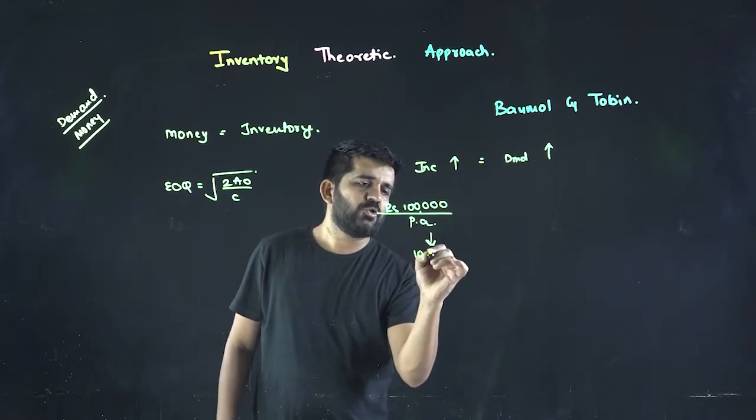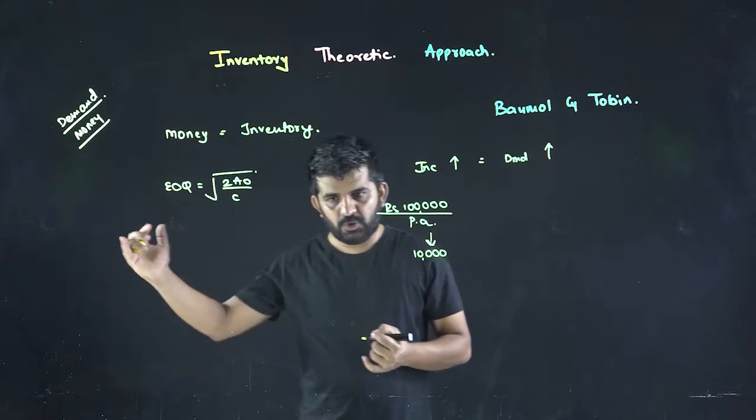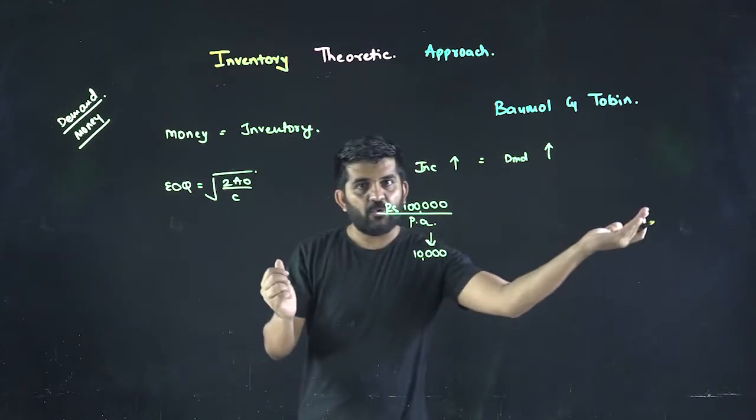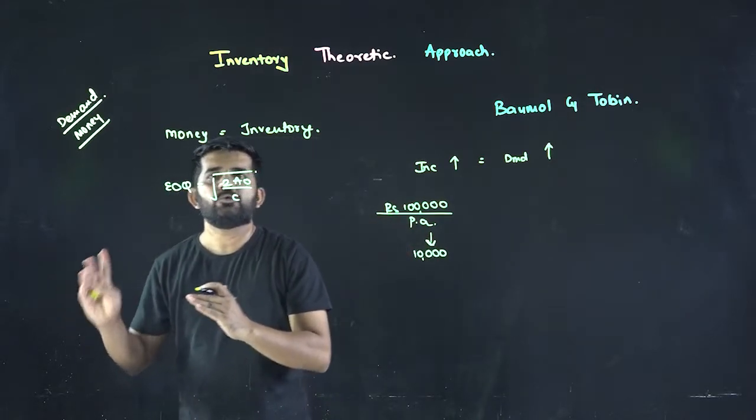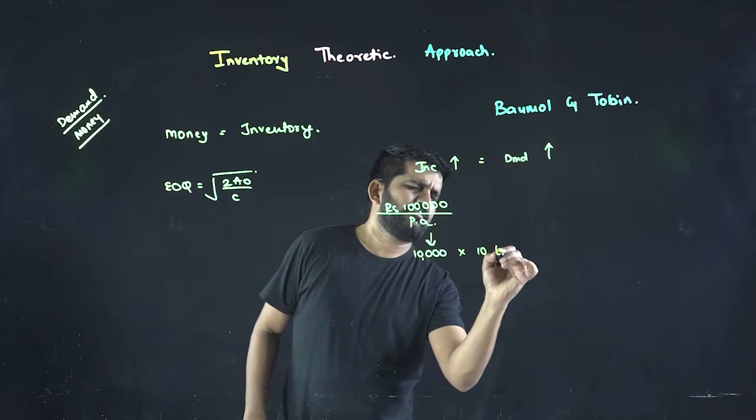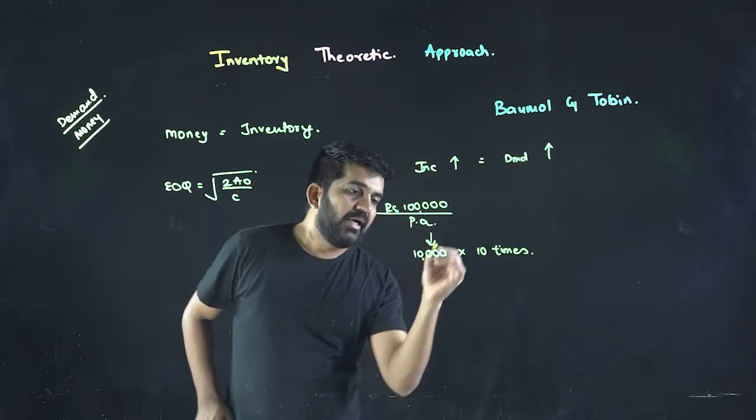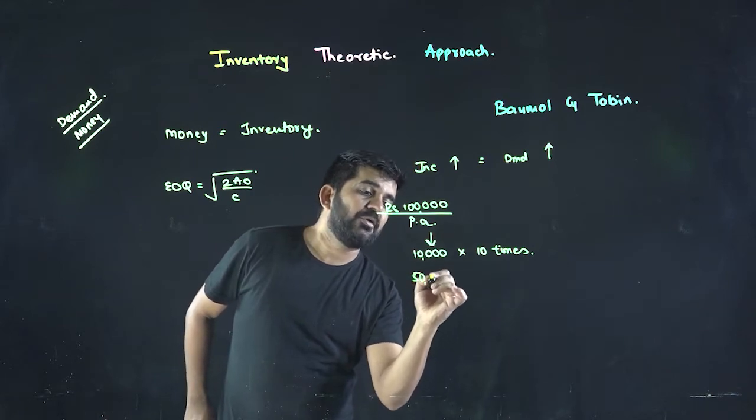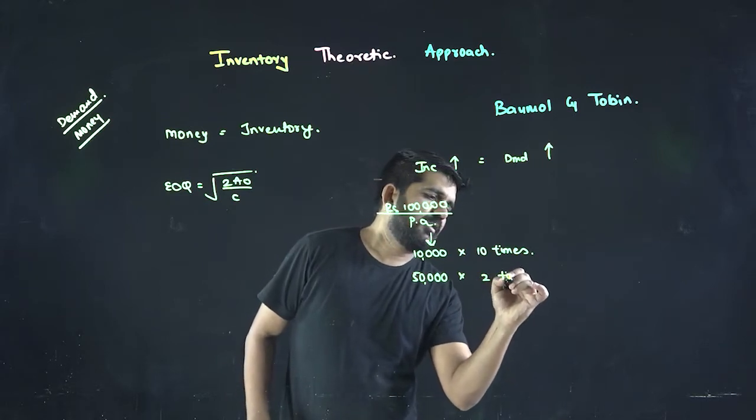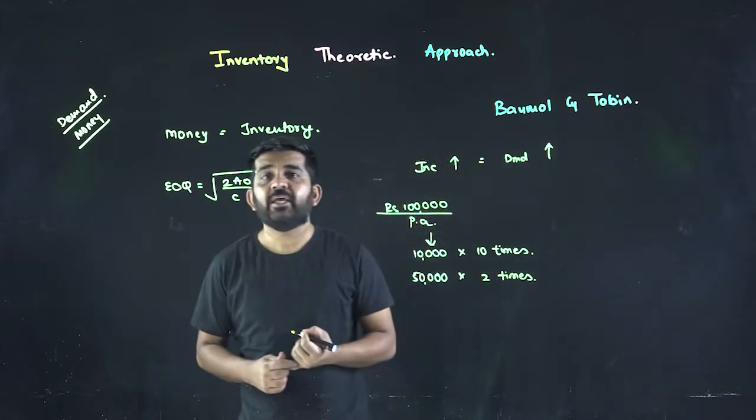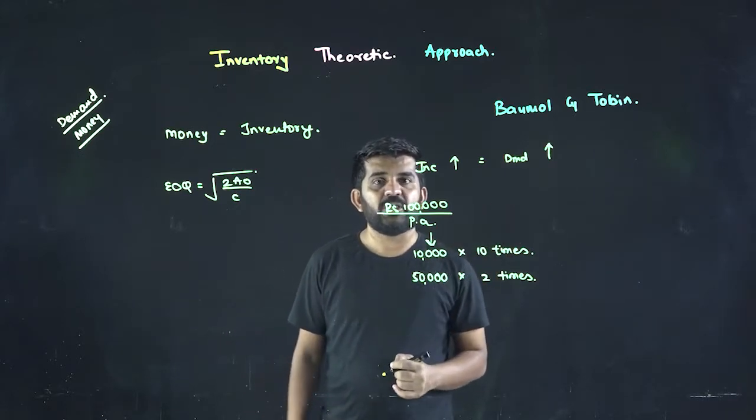Again using 10,000, and I'll do it for 10 times. And if I decide to keep 50,000 rupees as cash balance, I will be doing the same thing two times. Now how is it dependent? Try to understand.